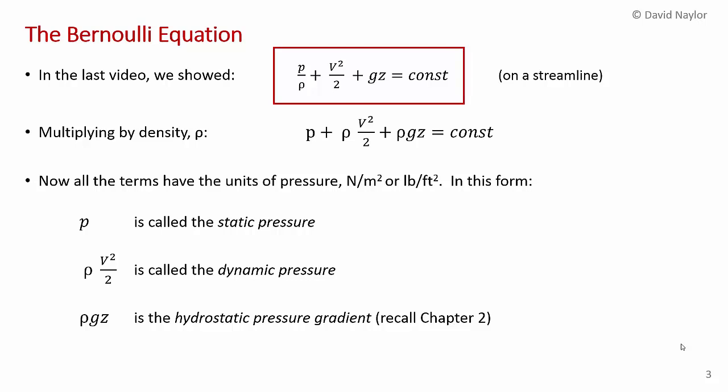Now if we multiply by density, we get this expression here, p plus rho v squared upon 2 plus rho gz equals a constant. Now this is a dimensionally homogeneous equation, so each term you can see has the units of pressure. And this first term here is just called static pressure.